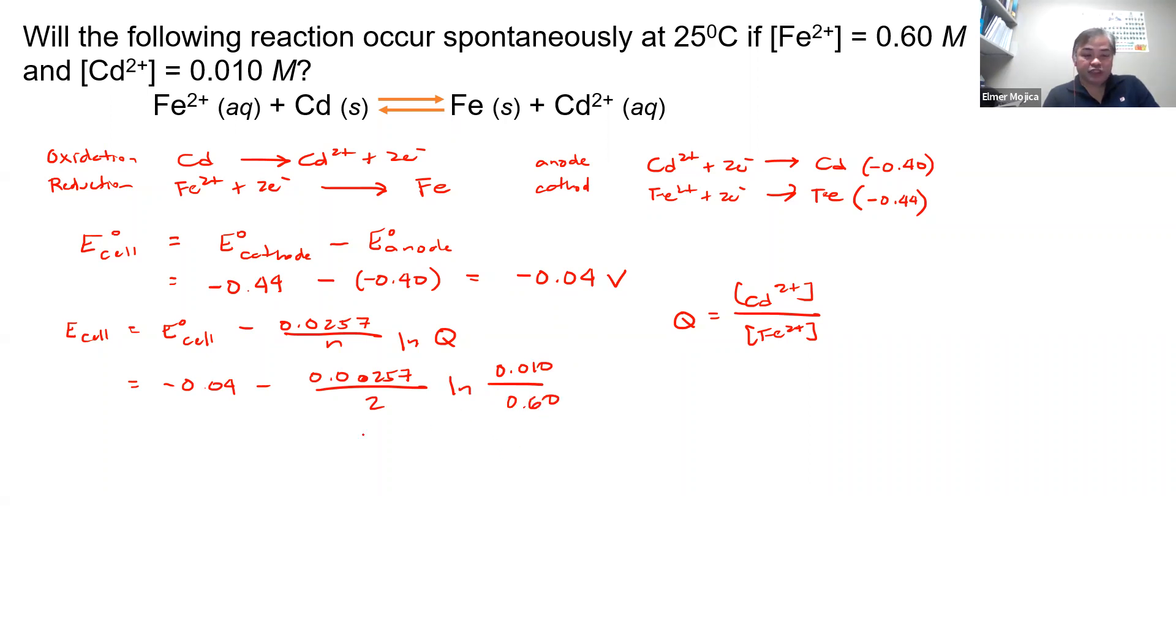So you're going to get the overall cell potential to see if it becomes spontaneous, to see if this becomes positive. But if you're going to look at the answer here, what will happen? So negative 0.04, it becomes 0.013 volts.